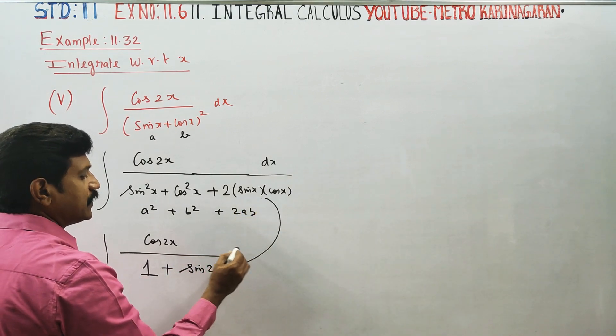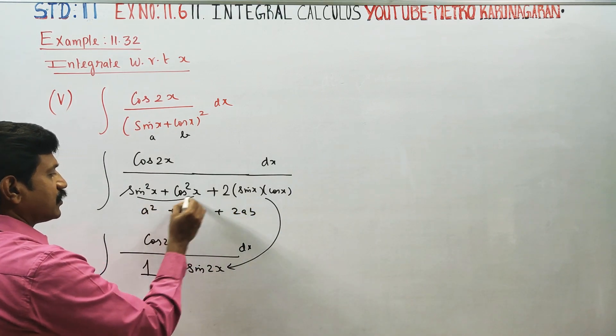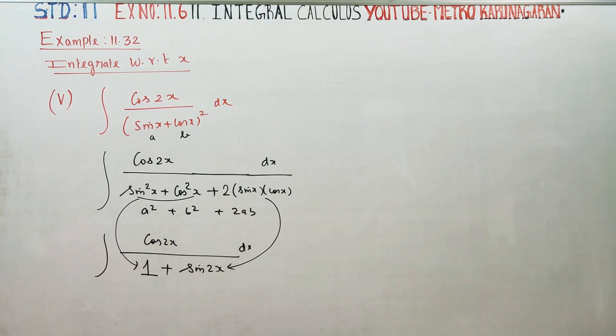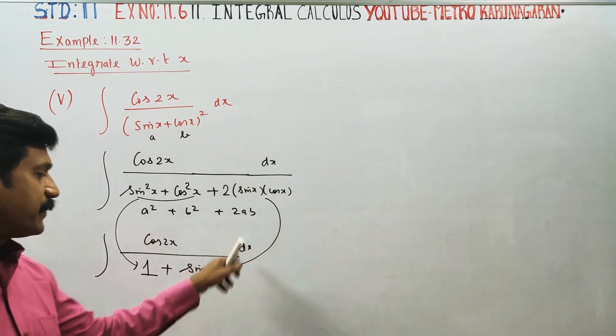This uses trigonometry identities. This is from 11th standard, third chapter: 2sin(x)cos(x) = sin(2x).